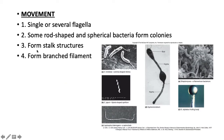Bacteria may also have movement via single or several flagella. They may form colonies or cluster together, and some form stalked structures or branched filaments. The comma-shaped one is vibrio, and the classic example of that is cholera.